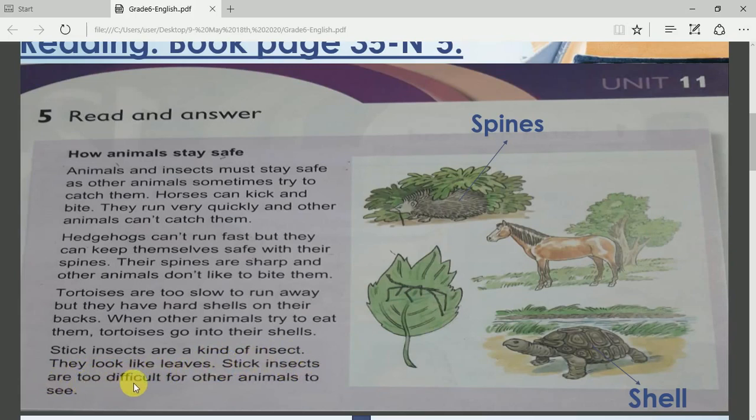Take a look at the picture here. Here you can see a hedgehog, a horse, a stick insect, and a tortoise.